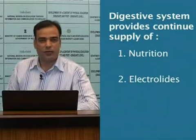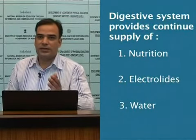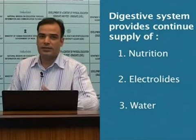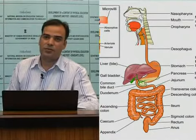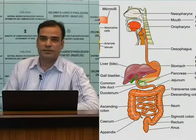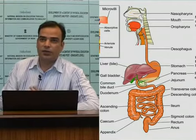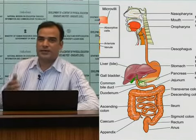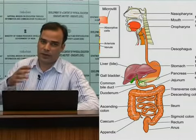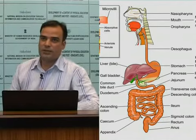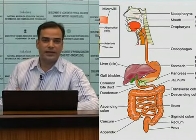Water is also essential for our body. These three things — nutrition, electrolytes, and water — are provided by the digestive system through two main processes: digestion and absorption. If we see the functions of the digestive system, there are basically two main functions: digestion and absorption. Digestion can further be divided into two sub-processes: movements and secretions.